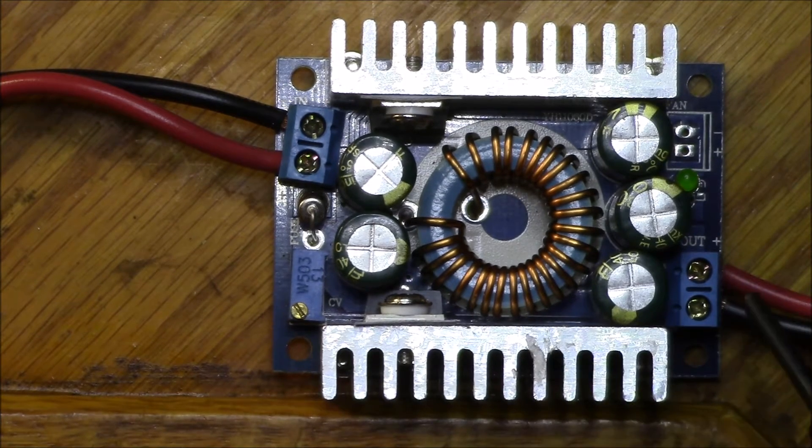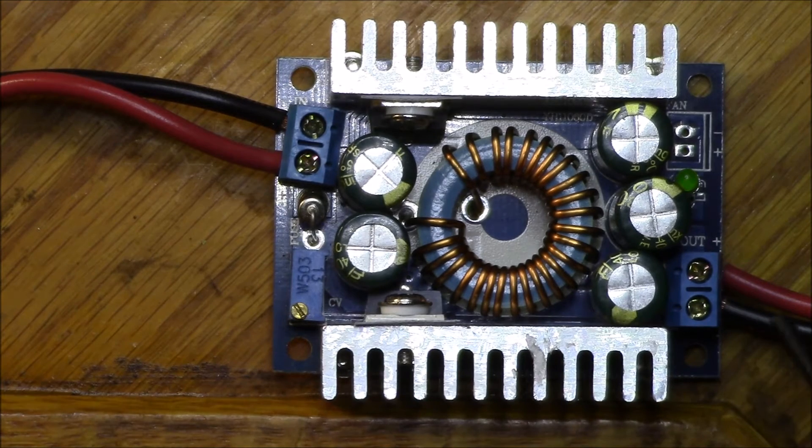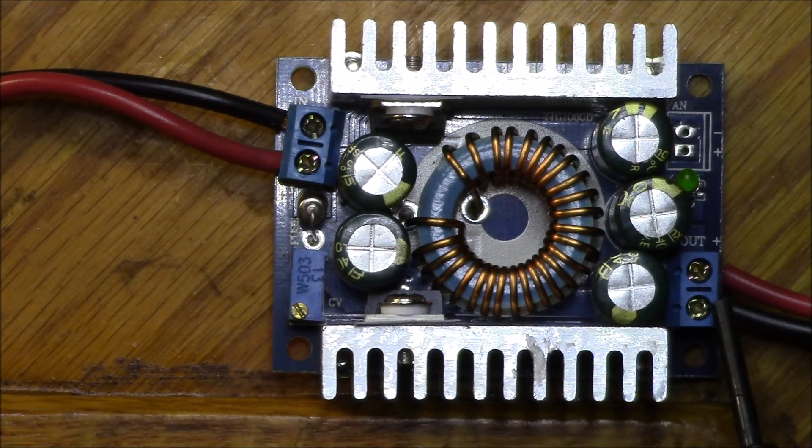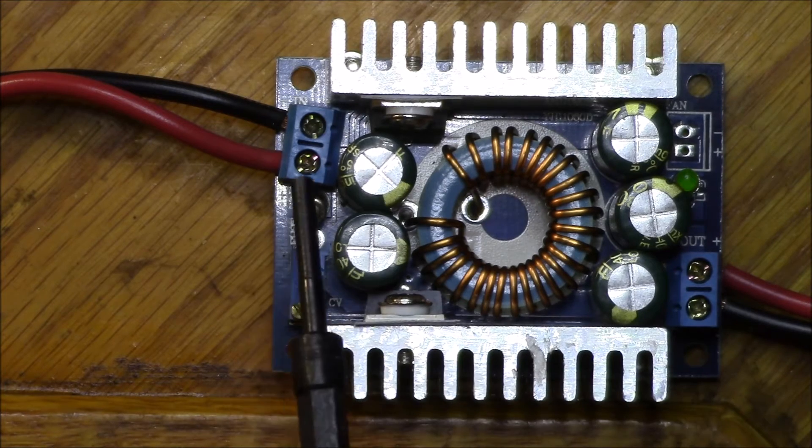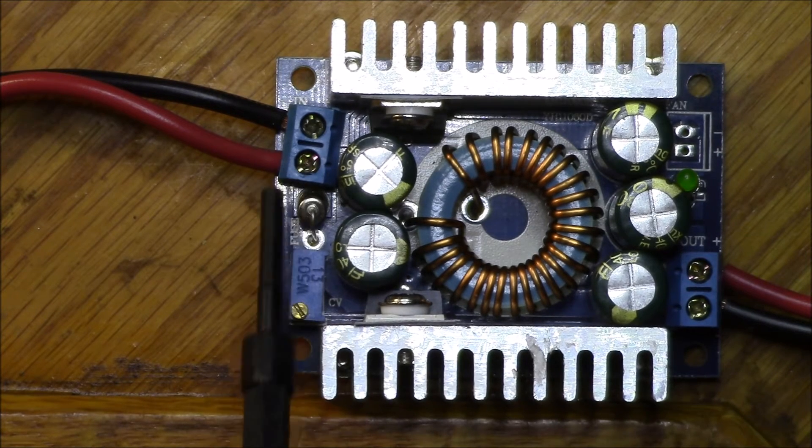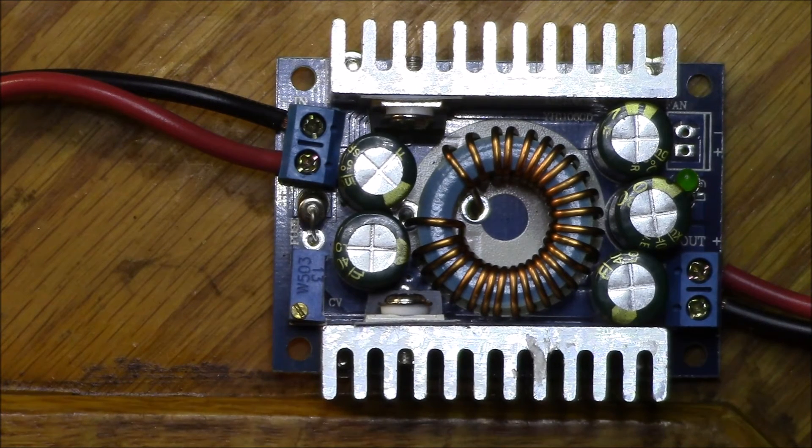So this is a DC to DC buck converter, meaning it produces a DC output at a lower voltage than the DC input, or in the AC world it's like a step-down transformer.